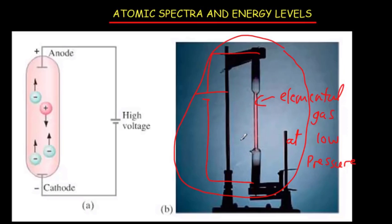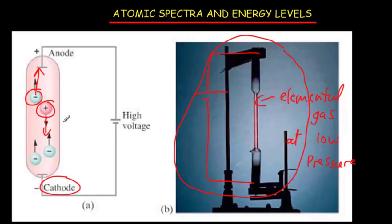That's going to cause some ions to form, so you're going to have some electrons and some positive ions. The electrons are going to be attracted to the positive anode, and the positive ions are going to be attracted to the cathode. Now they've got some kinetic energy, and they're going to collide with some of the elemental gas atoms. That means there's going to be a transfer of energy, and these elemental gas atoms are going to get into an excited state.